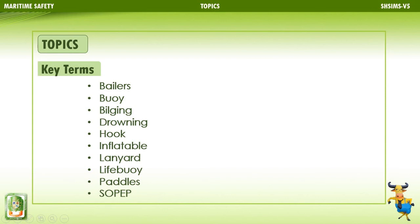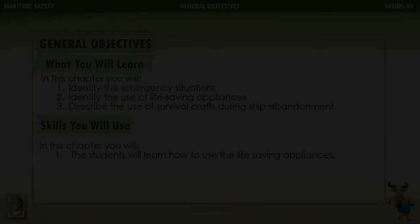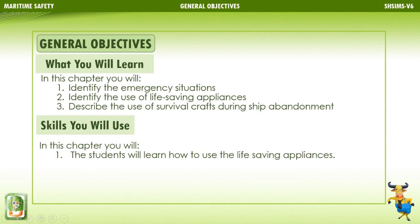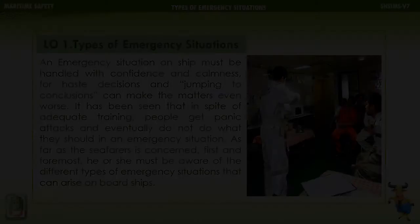Key terms include: bailers, buoy, bilging, drowning, hook, inflatable, lanyard, life buoy, paddles, SOAP app. General objectives: you will identify emergency situations, identify the use of life-saving appliances, describe the use of survival crafts during ship abandonment, and learn how to use life-saving appliances.